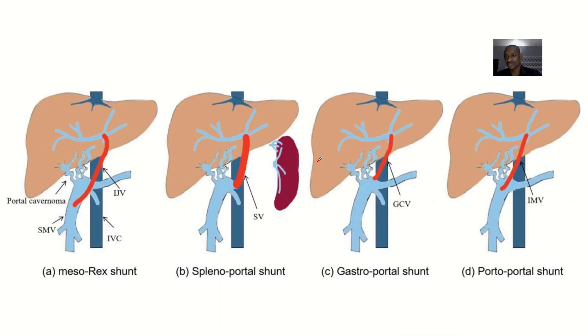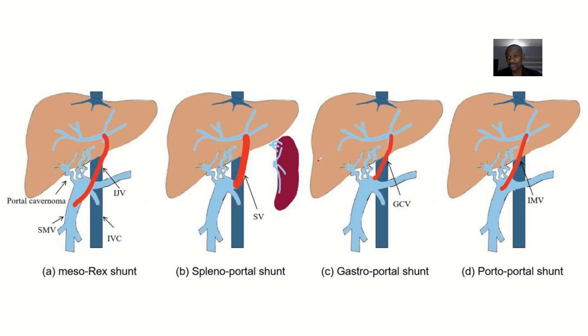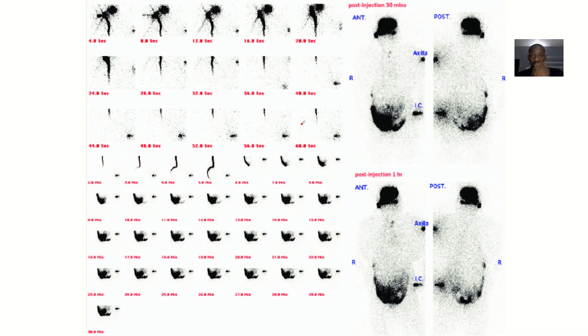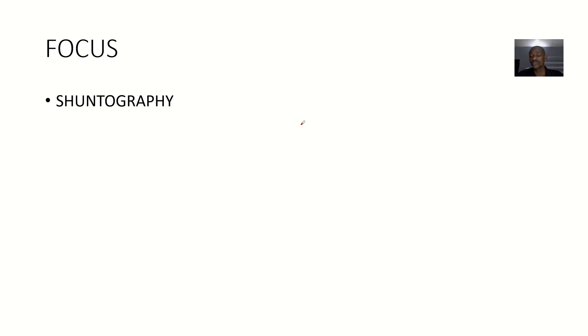If I say shuntography — we've spoken a lot about shunts: the portocaval shunt, the mesocaval shunts, portosystemic shunts, and even the shunt we discussed when talking about hydrocephalus. Shuntography is an imaging study done after you have performed a shunt — a surgery to connect parts not naturally connected — to monitor for possible complications like thrombus formation, narrowing, or complete blockage of the shunt.